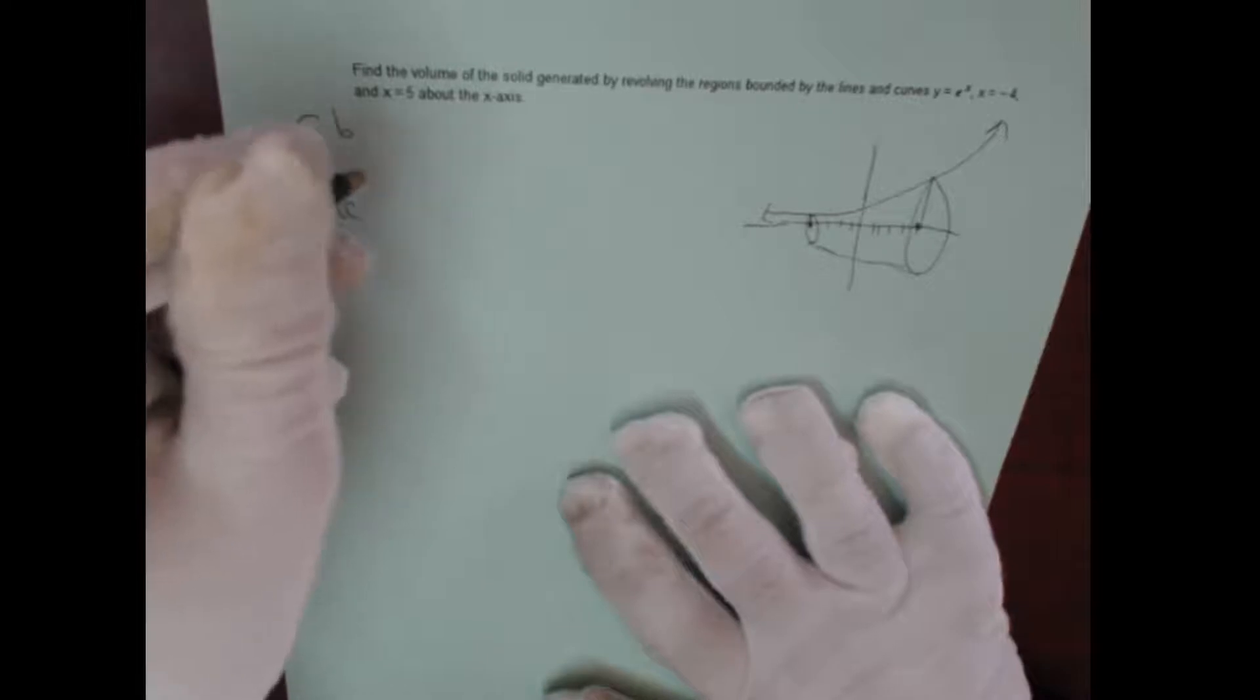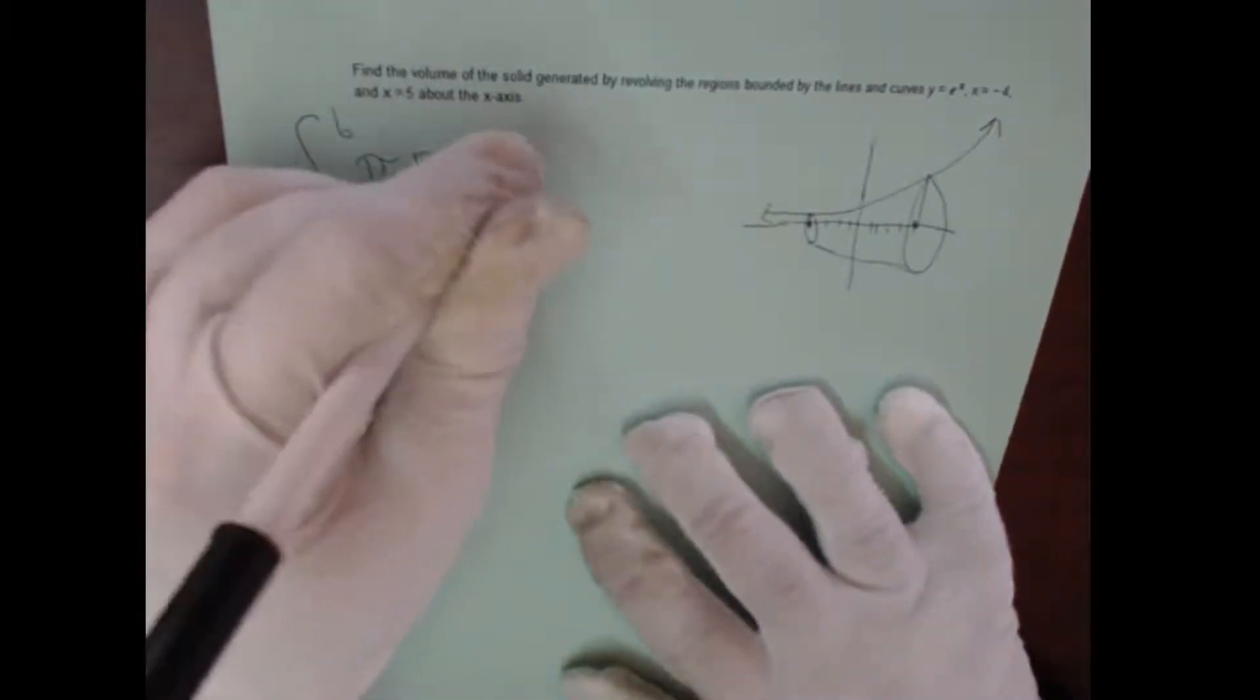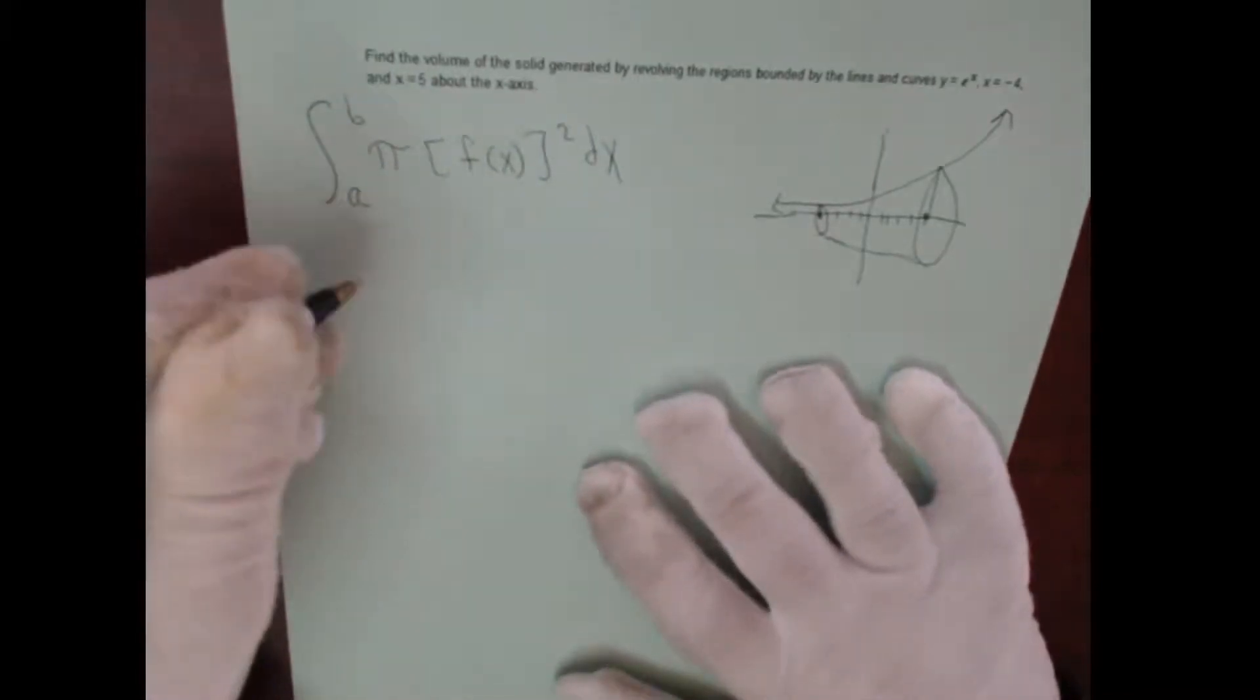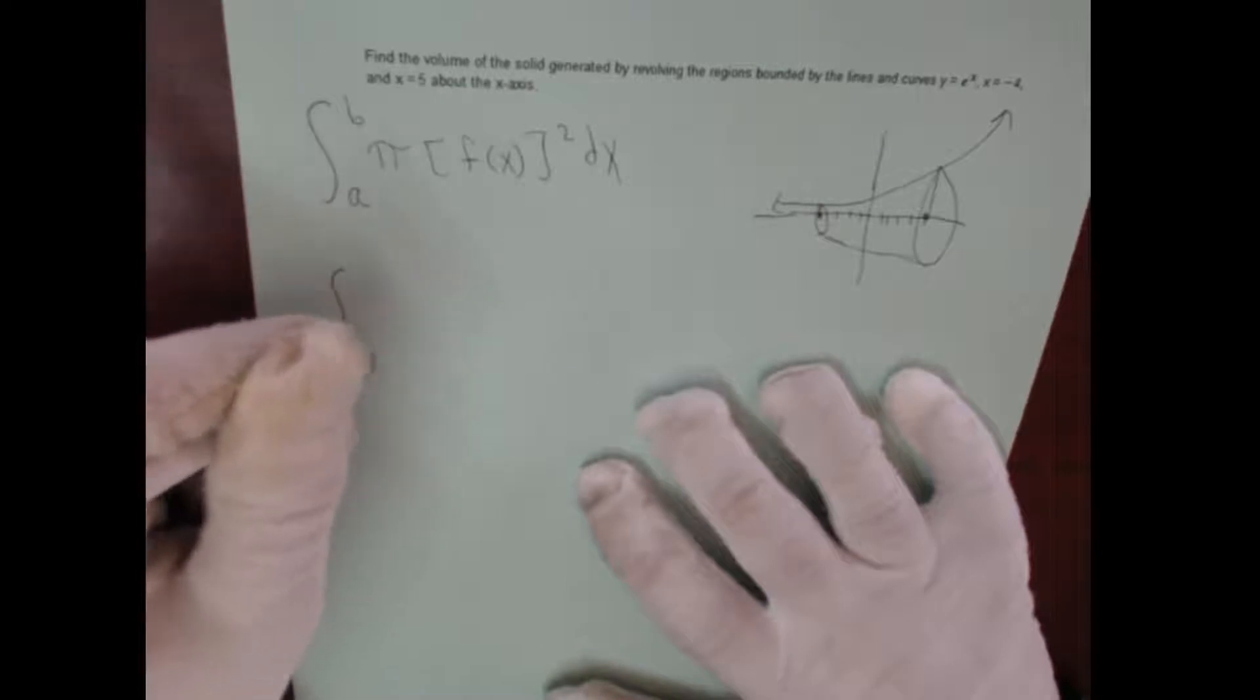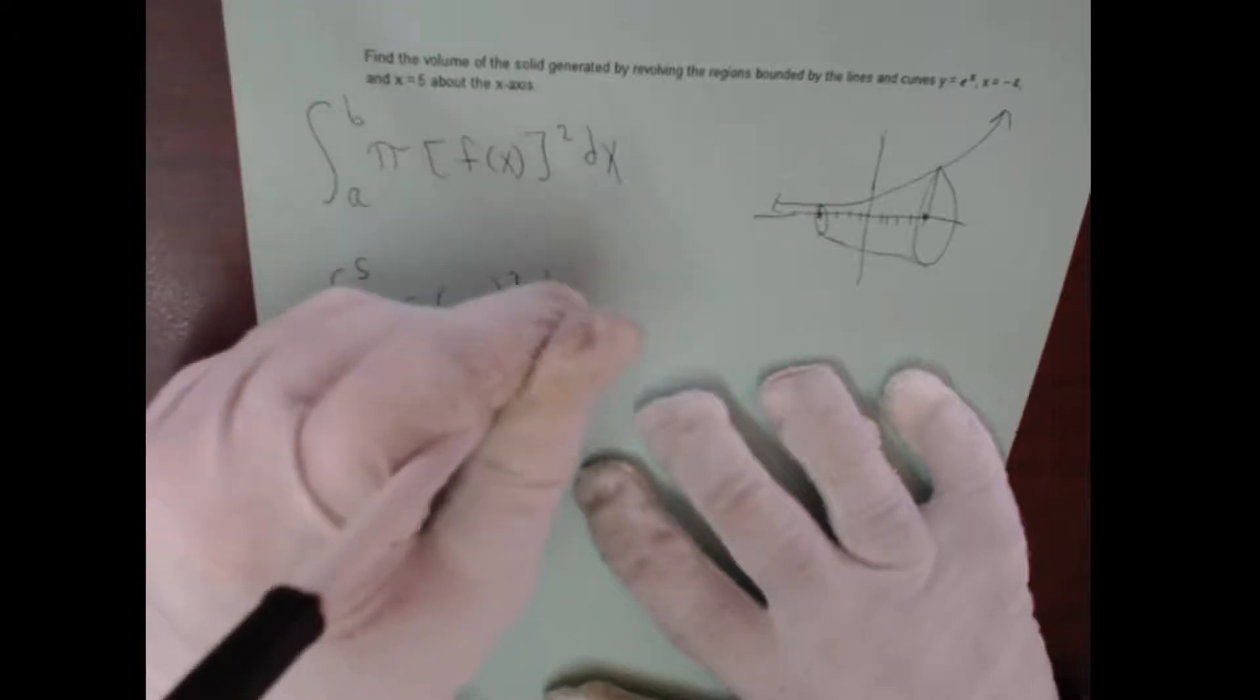So that's the formula right there. And so here we go, this will be the integral from negative 4 to 5 of pi times our function e to the x squared. And that's all there is to it.